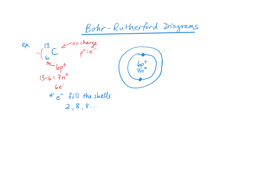So how many electrons do I need? Six. I've put two here, so now I've got four more to go — one, two, three, four. That's six electrons in total: one, two, three, four, five, six. Six negatives and six positives means the charge is neutral. There's no charge, coming from protons and electrons being equal.